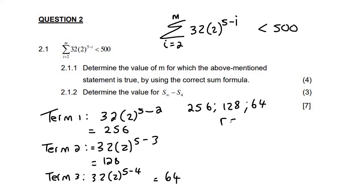That is geometric, where the ratio is a half. If you battle to find the ratio, you can take term two divided by term one, and that's a half. So it's definitely geometric, so we can use the sum formula for a geometric.